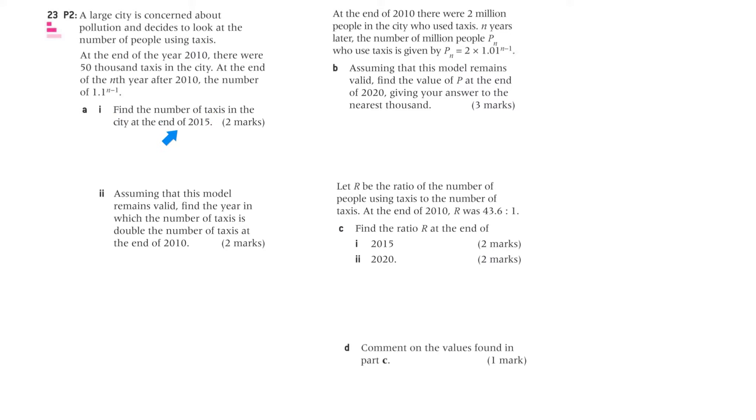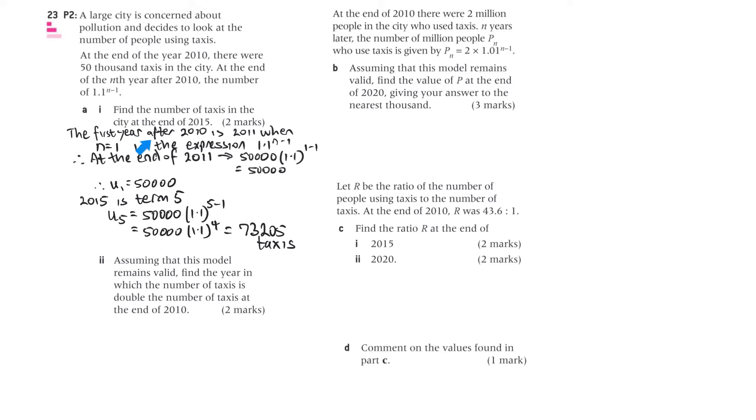Part A1. Find the number of taxis in the city at the end of 2015. So the first year after 2010 is 2011, when n equals 1, in the expression 1.1 to the n minus 1. Therefore, at the end of 2011, it's 50,000, which is the initial value, times 1.1 to the 1 minus 1, which is 50,000. Now that we know u1, 2015 is term 5, because we know that term 1, we said n was 1, was 2011. So 2015 is term 5. So u5 equals u1, we now know u1, is 1.1 to the 5 minus 1. So u5 is 50,000 times 1.1 to the power of 5 minus 1, which is 73,205 taxis.